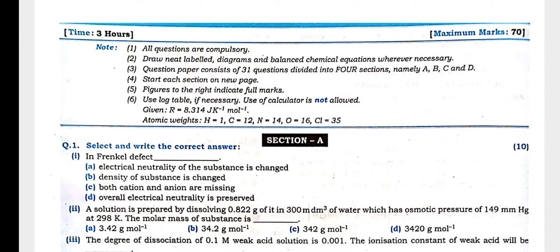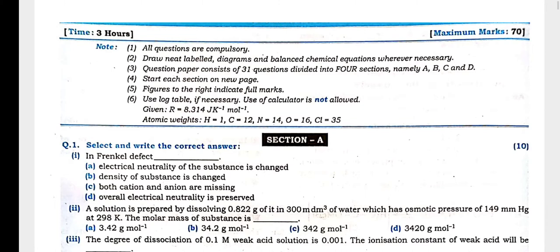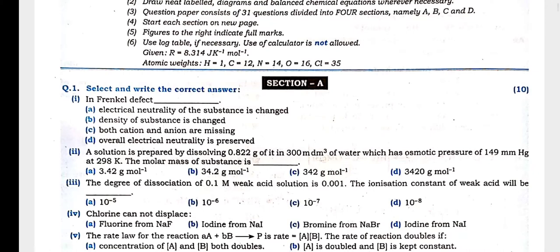As we know very well, there are in all 10 MCQs and 8 ones and 10 answers. The first question of the MCQs is: in the Frenkel defect, what happened? There are four options given. As electrical neutrality of the substance is changed, density of a substance is changed, both cation and anion are missing, or electrical neutrality is preserved. In this Frenkel defect, as you know, studied from the solid state chapter, overall electrical neutrality is preserved. You have to remember.